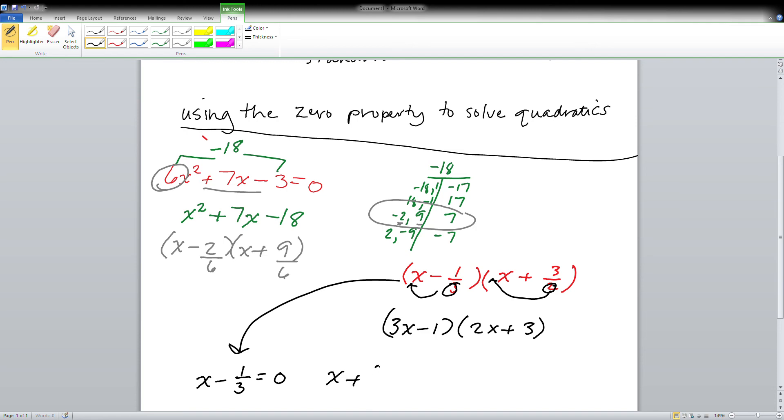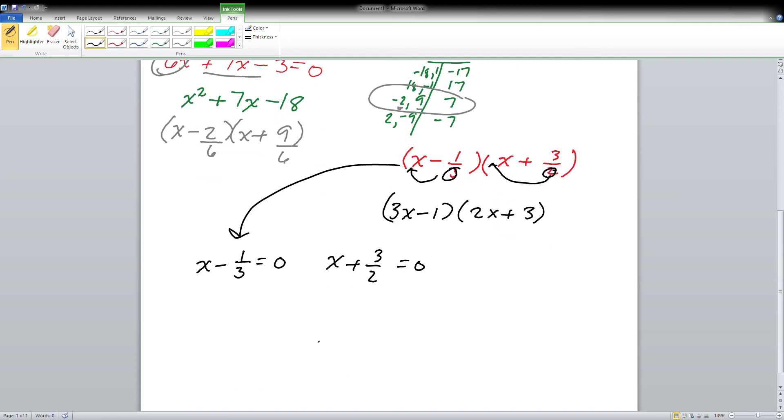Now here is why this particular method is called bottoms up method, because now you take the bottom number and move it in front to be the coefficient. So 3x - 1 would be one factor and 2x + 3 would be the other.